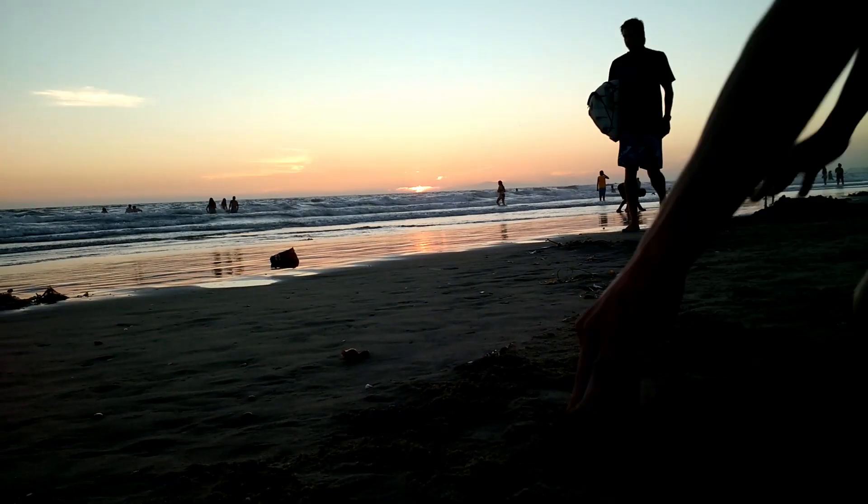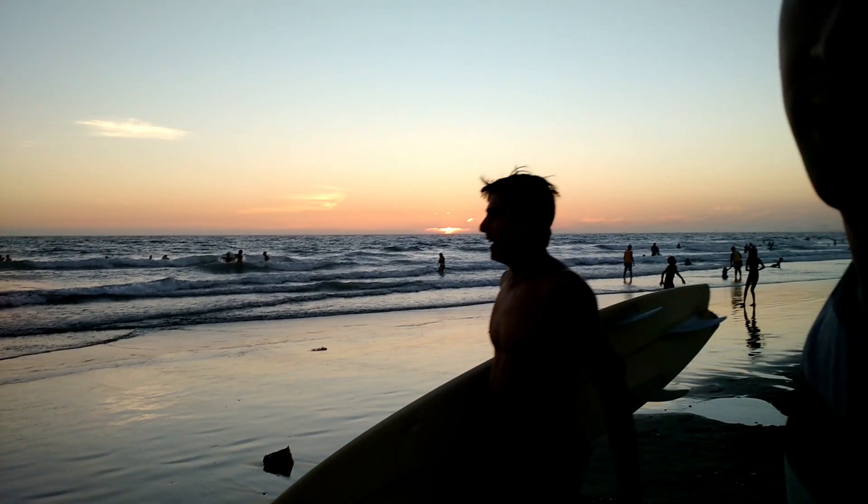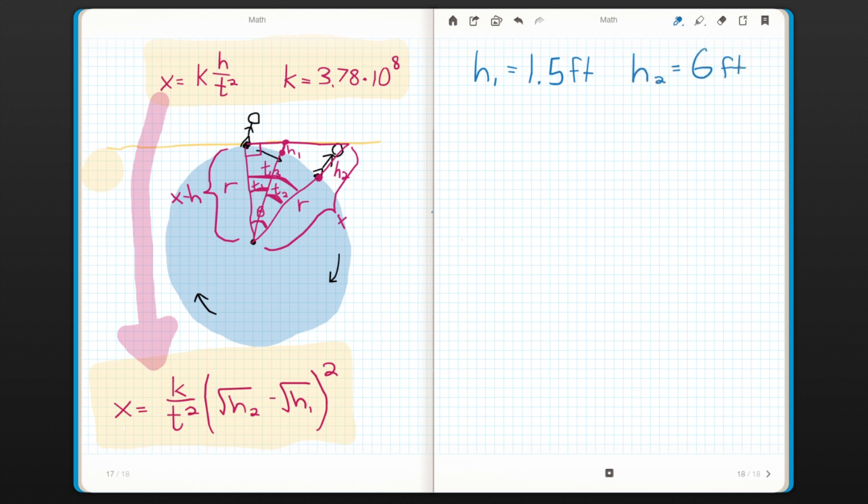Now I start my timer, and I judge that my eyes were about a foot and a half above sea level when I made that measurement. That was five seconds, and I judge that my eyes were about six feet above the sea level when I made this measurement. Okay, that's it. I think we're good. I think we have the data. We do have the data.